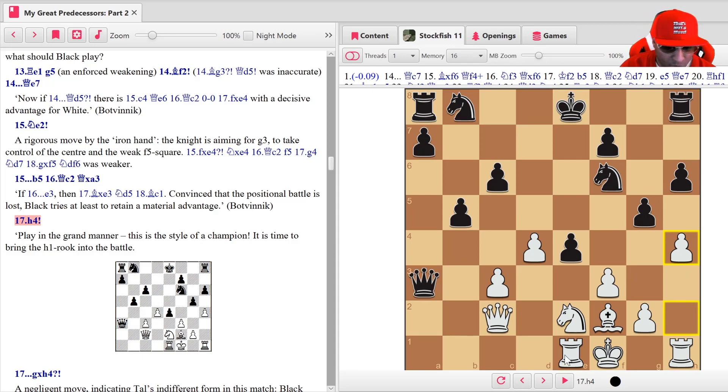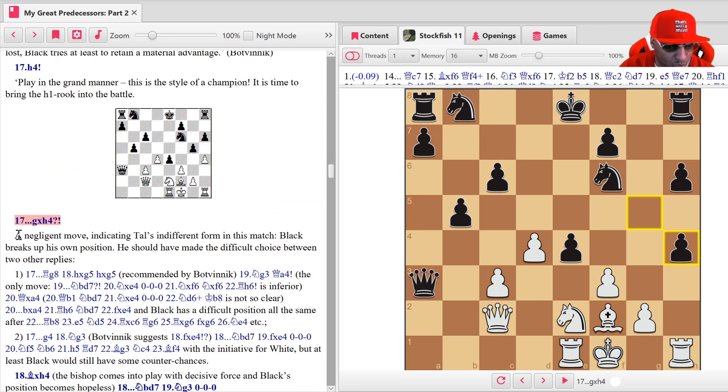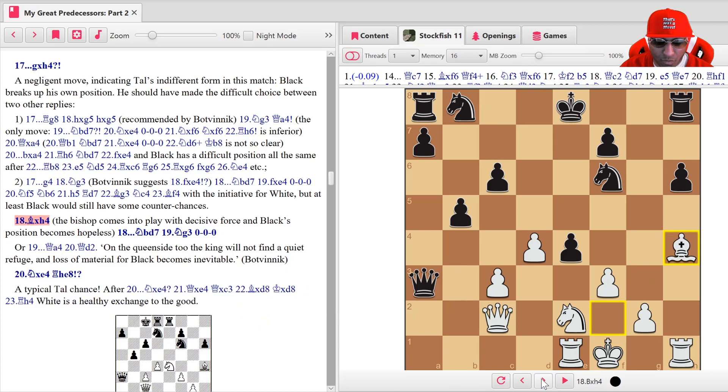Then it was g takes h4, very bad move. A negligent move indicating Tal's indifferent form in this match. Black breaks up his own position. He should have made the difficult choice between the other replies, rook g8 and g4, interesting. Bishop takes h4, the bishop comes into play with decisive force and Black's position becomes hopeless.